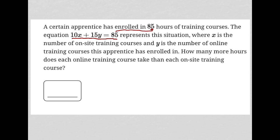Where x is the number of on-site training courses — so 10 times x, 10 times the number of on-site training courses — and y is the number of online training courses this apprentice has enrolled in, so 15 times y, y being the number of online training courses.